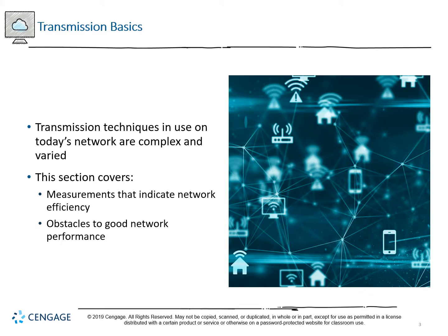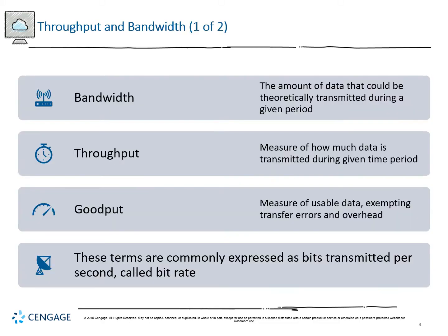Transmission techniques in use on today's networks are complex and varied because of the different types of media, types of connectors, different types of intermediary devices, and the profusion of end devices currently present. The term we hear most often when talking about the speed of an internet connection is bandwidth. This is the amount of data that could theoretically be transmitted during a given period. The technical definition is the difference between the highest and lowest frequency a particular medium can carry — the width of the transmittable frequency band, hence bandwidth.